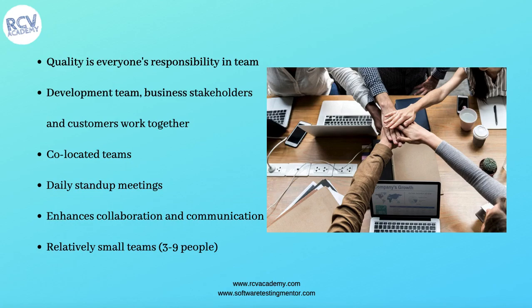Agile teams are also relatively very small. The team should not be more than three to nine people. Small teams can organize very well, communicate, collaborate, and know the goal they are working towards. If teams are very big, communication and collaboration become very difficult and not fruitful. These are some of the key points of the whole team approach.